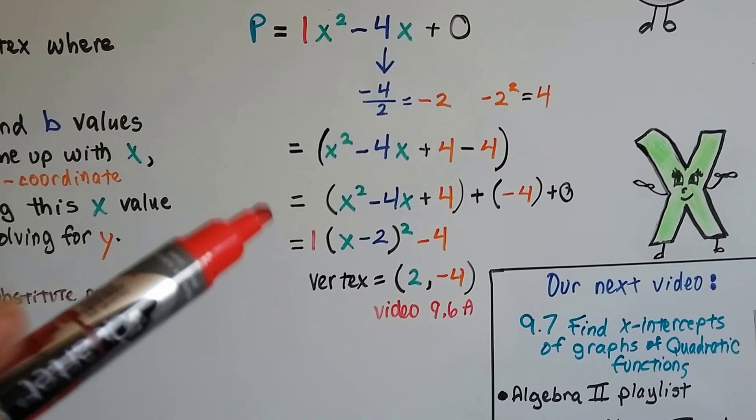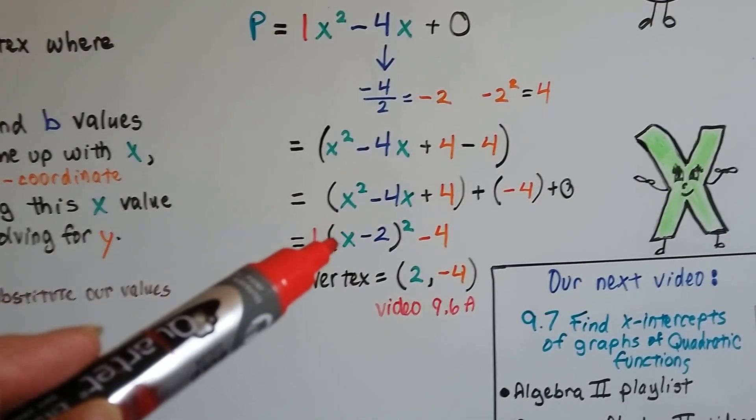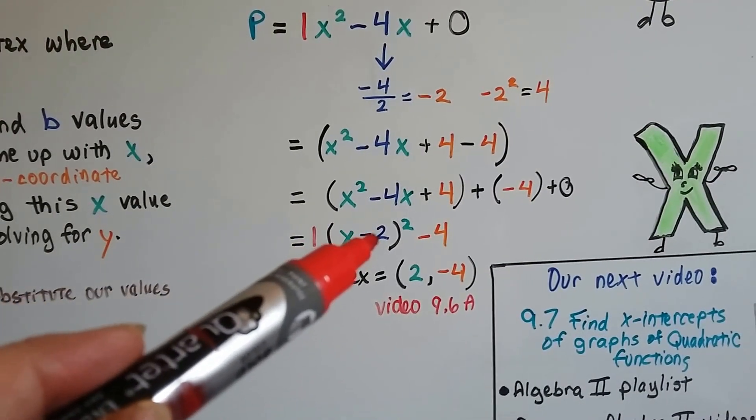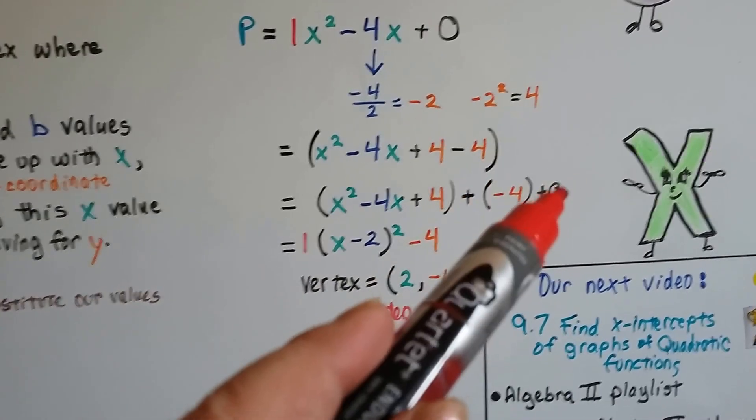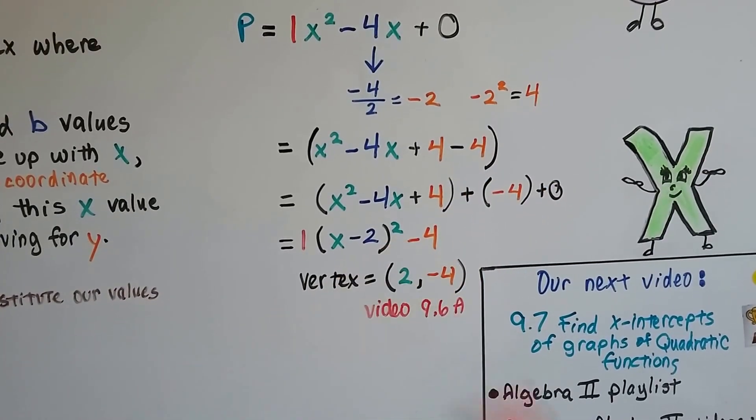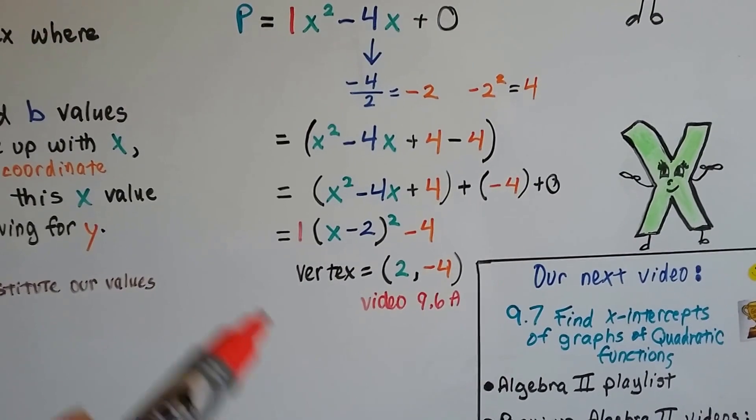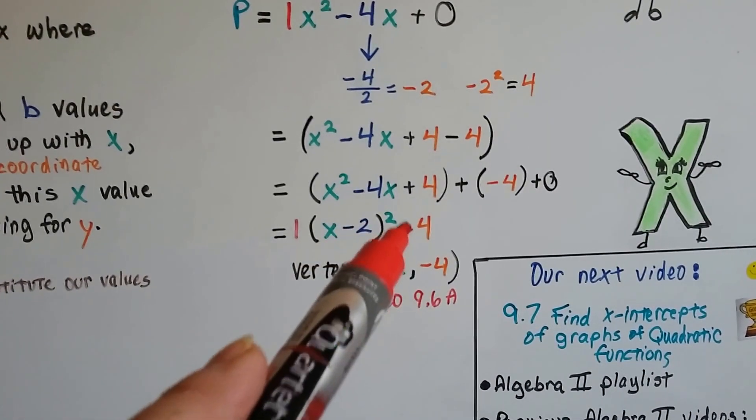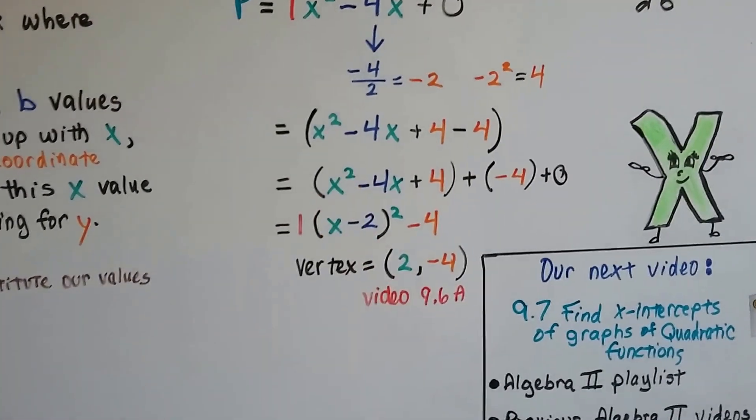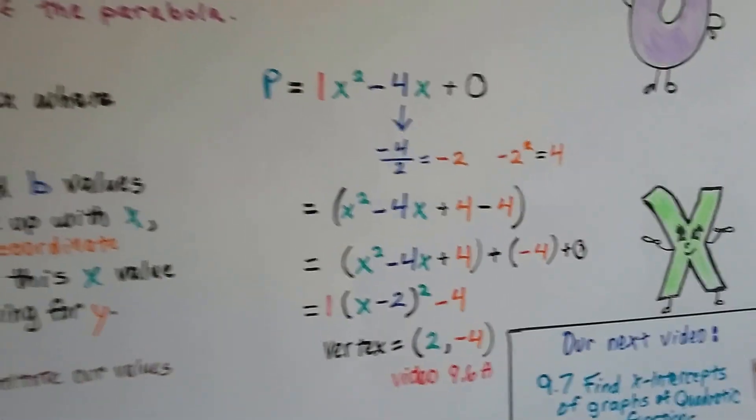When we factor this, we get 1(x - 2)² - 4. So our vertex is (2, -4), and that's how we did it in video 9.6a. I'm going to show you a different way.